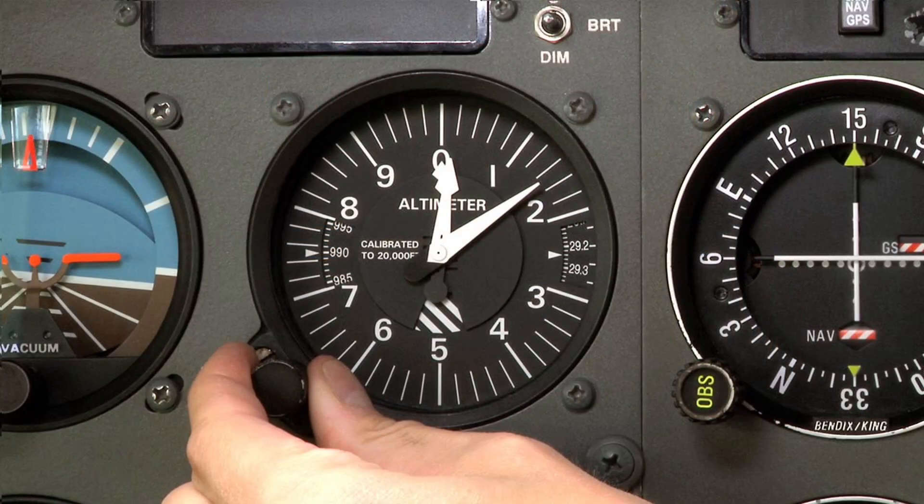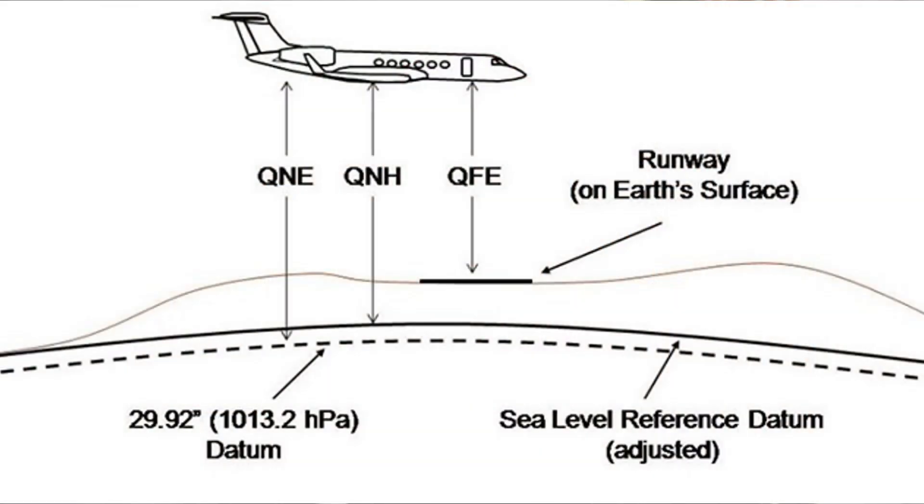The first type of altitude is indicated altitude — simply put, that is what you see on your altimeter. The reading depends on the setting on the altimeter dial, and those different reference points are QNH, QFE, and QNE. QNH is the nautical height, or altitude above local sea level. QFE is the field elevation, so the reading would be zero when set to QFE if you're on the ground at the airport. You could also reference standard pressure, which is 29.92 inches of mercury. Indicated altitude is very important because that's what we reference when communicating to ATC.